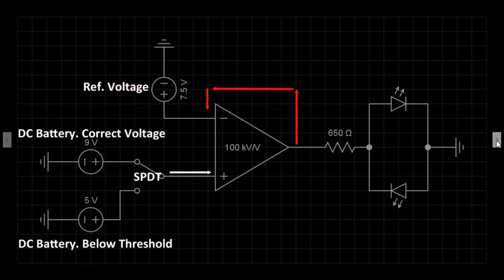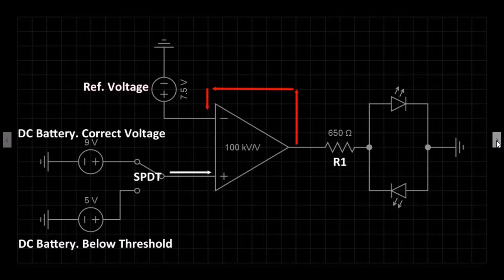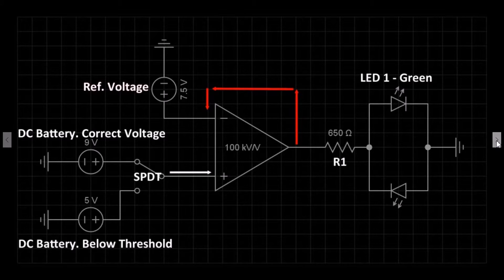At the output we have a current limiting resistor and then two LEDs. One in forward bias and one in reverse bias. The top LED is green to indicate that the circuit power is OK.